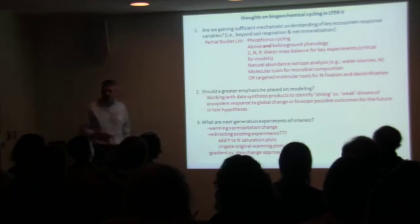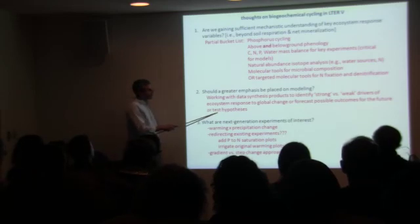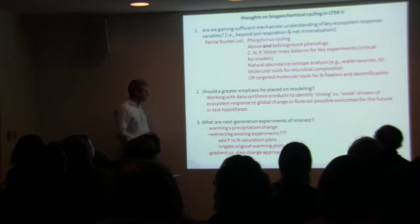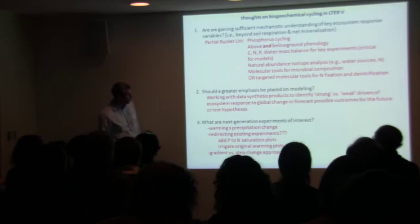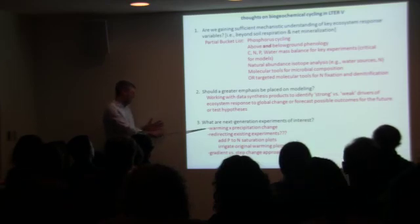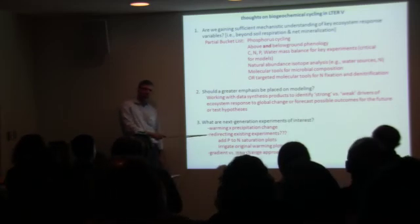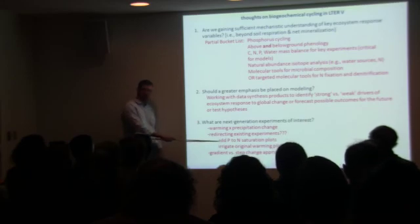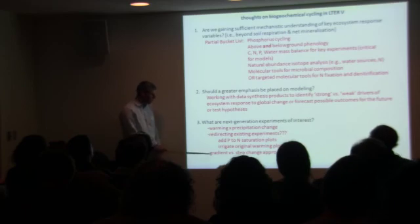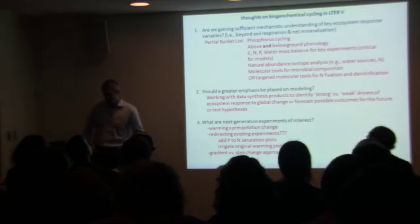I think we should think about, in LTER-5, a greater emphasis on modeling, because modeling helps integrate all these different data sources that we can synthesize from the LTER. Importantly, the best thing you can do with a model is test different kinds of hypotheses. Typically right now, all the models are being used for forecasting, and they're always going to be wrong—we know that and that's okay. But I think they'd be much more useful for testing hypotheses, and I think that would be a good discussion. Finally, it's also worth thinking about what are the next generation experiments of interest? Are we done with warming alone? Should we do warming with precipitation? I mean, that's a pretty obvious experiment to do in a global change context. Is there any value in redirecting the existing experiments that have gone on for a long time and have kind of plateaued in the information gain? For example, should we add phosphorus to the nitrogen saturation plots? Should we irrigate some of the original warming plots to look at these temperature-by-precipitation interactions? When you're designing experiments, this idea of gradient versus step-change in process is also something worth thinking about. So there's a bit of a bucket list of things to think about, and I'll stop there.